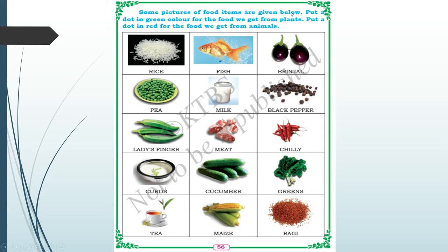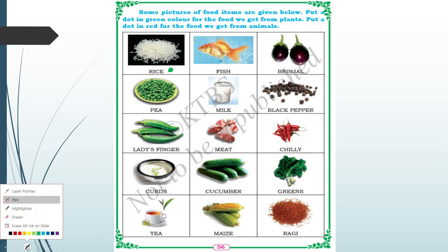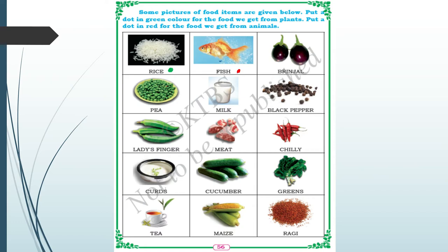Some pictures of food items are given below. Put a green dot for the food we get from plants, and a red dot for the food we get from animals. For example, rice we get from plants, so give a green dot. Fish we get from animals, so give a red dot.